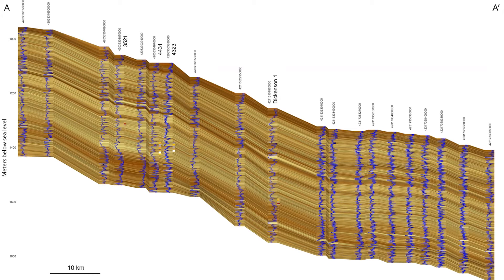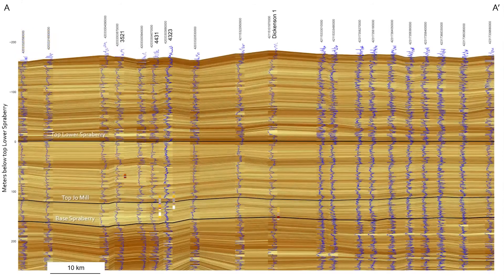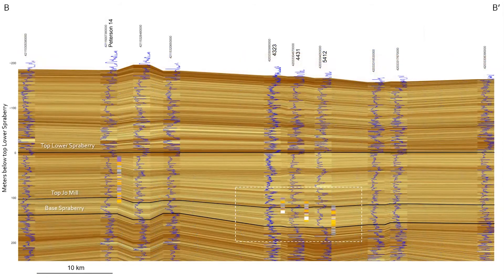These colors represent process interpretations of the facies described from cores in the field. Here's that same AA' cross-section but flattened on the top Sprayberry. Here's cross-section BB', which approximates a strike section. The automated ChronoLog correlation is really valuable to give a first-pass impression of the subsurface stratigraphic architecture. We're focused on the lower Jomil section, which shows an overall sandy sheet-like character in the cross-section.